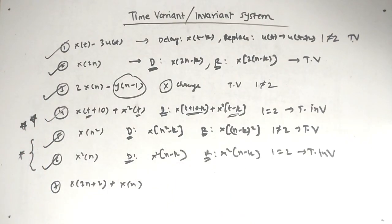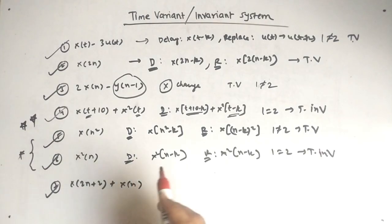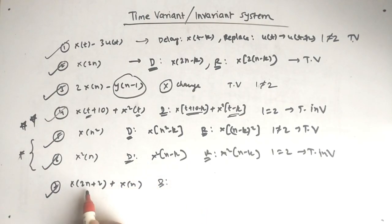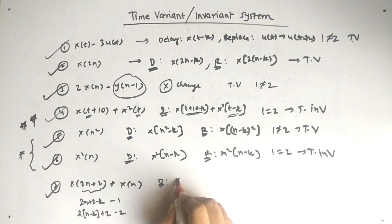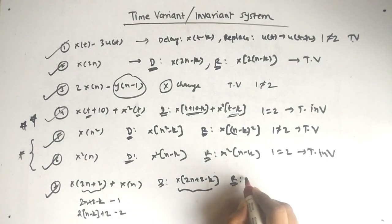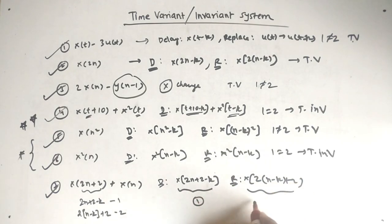Note examples 4, 5, and 6 — they are very important functions. The seventh example is y = x(2n + 2) + x(n). When we delay: x(2n + 2 − k) + x(n − k). When we replace n with (n − k): x(2(n − k) + 2) + x(n − k) = x(2n − 2k + 2) + x(n − k). These are not the same as the delay result, so one is not equal to two — it is time variant.